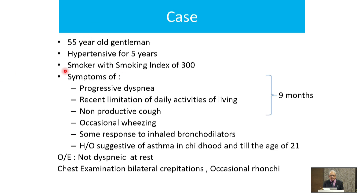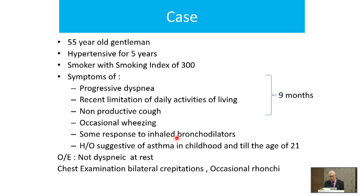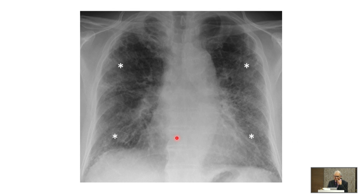I start with the case of a 55-year-old gentleman, hypertensive smoker, who came with progressive dyspnea, recent limitation of daily activity, non-productive cough, occasional wheezing, and some response to bronchodilator — suggestive of asthma. On examination, he was not dyspneic at rest, and he had bilateral crepitations and rhonchi.